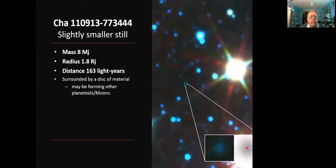Slightly smaller, we found an eight solar mass object, just 1.8 times the radius of Jupiter. So this is a planet. This is a gas giant planet, quite a large super Jupiter.